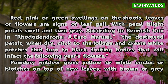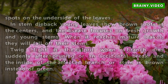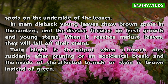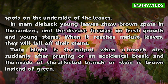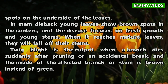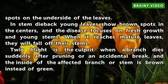Powdery mildew gives yellow or white circles or blotches on top of new leaves, with brown or grey spots on the underside of the leaves. In stem dieback, young leaves show brown spots in the centers, and the disease focuses on fresh growth and young stems. When it reaches mature leaves, they will fall off their stems. Twig blight is the culprit when a branch dies suddenly after pruning or an accidental break, and the inside of the affected branch or stem is brown instead of green.